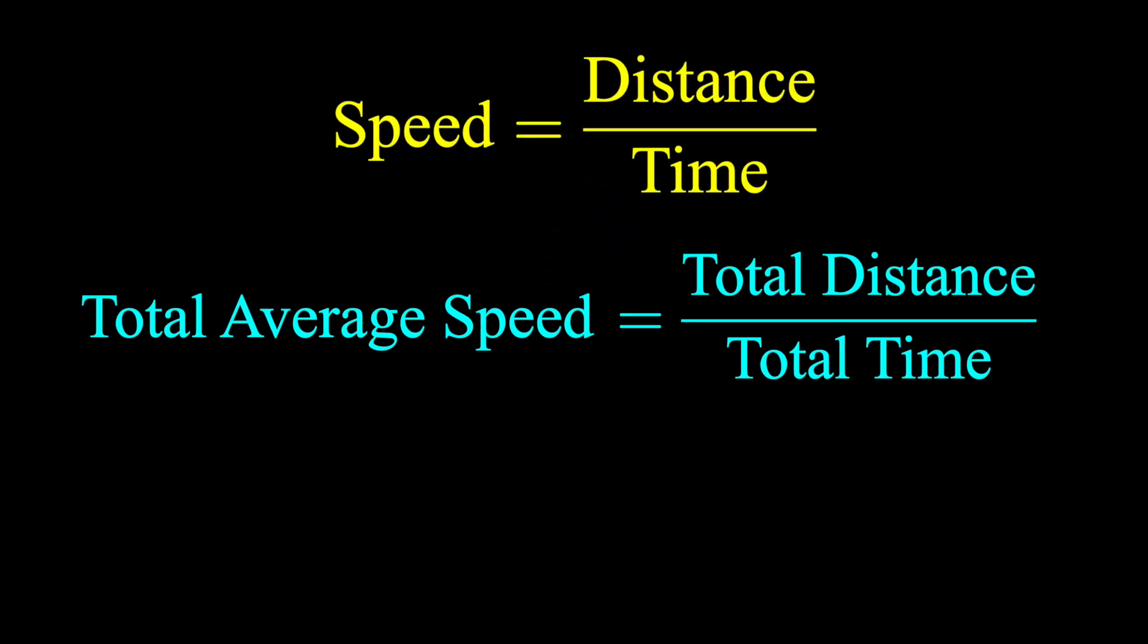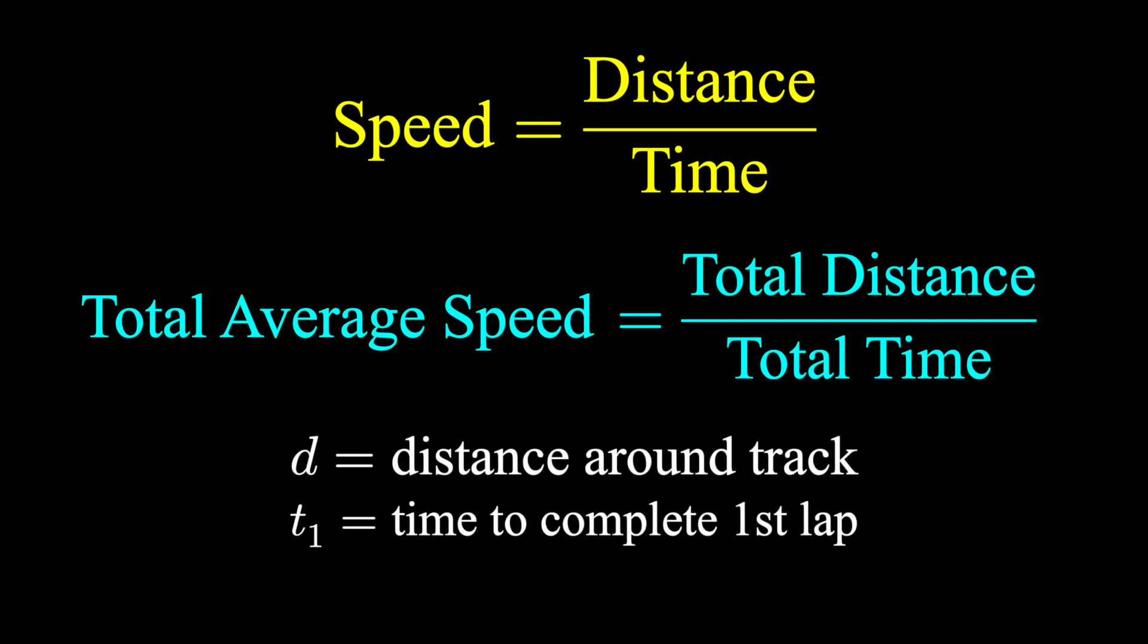Speed is distance divided by time. Let's let D be the distance around the track. Let's let T1 be the time it takes to complete the first lap, and let's let T2 be the time it takes to complete the second lap.